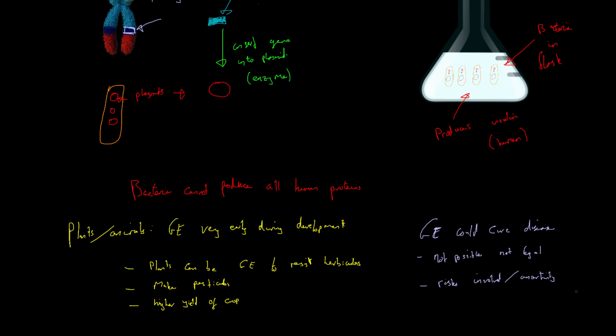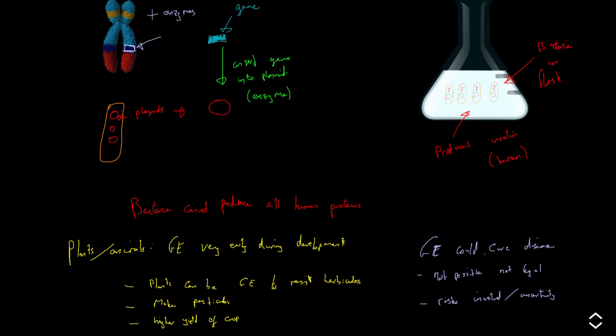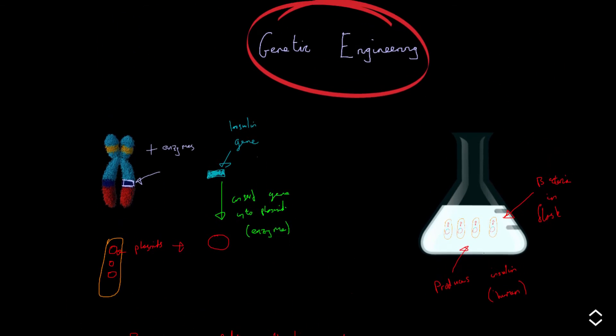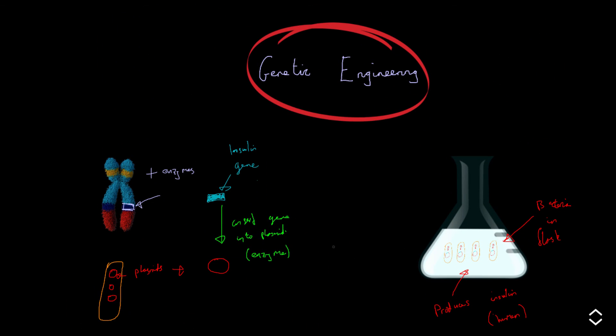So any question you get you need to be able to argue the fors and against of genetic engineering and you need to know of course how it works. The only one you need to know how it specifically works is this one with the bacteria. With humans, with animals, with plants, it's going to be way more complicated and you don't need to know details.